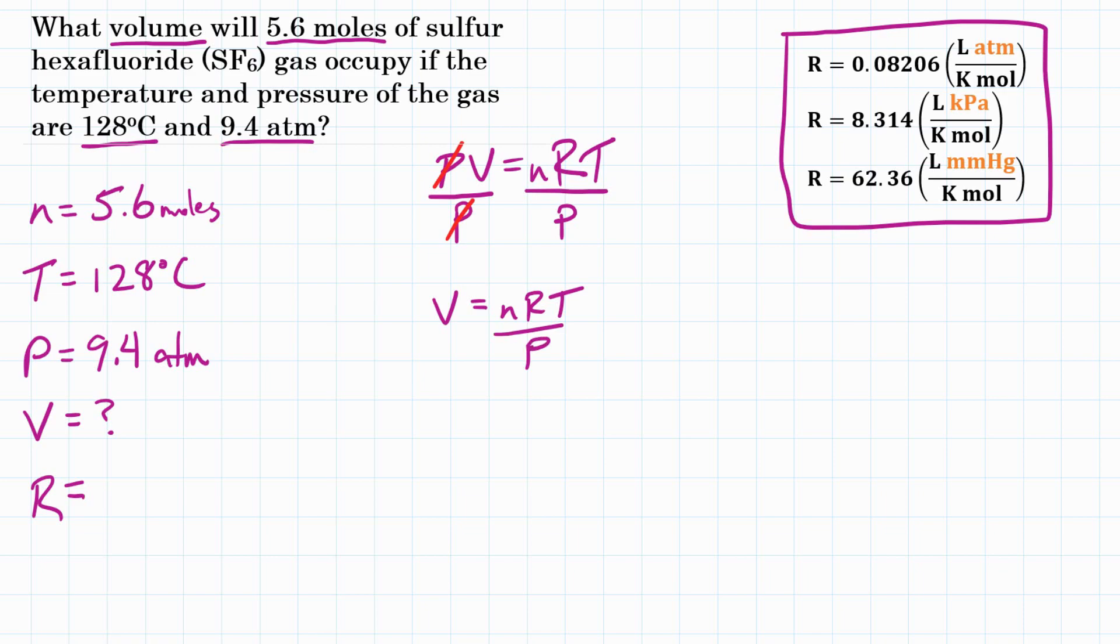So now we can plug in our numbers for our variables. So for n, for moles, we have 5.6 moles, abbreviated MOL. And then we are going to multiply that by uppercase R, the universal gas constant. Now we have multiple options for the universal gas constant. They're up here in the top right.